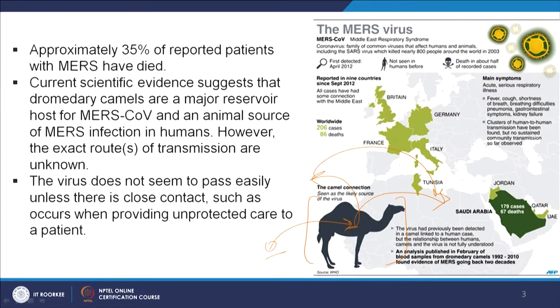This virus does not pass very easily — you require really close contact to transmit it, such as when treating a MERS patient without properly protecting yourself. An analysis published in February of blood samples from dromedary camels collected from 1992 to 2010 found evidence of MERS going back two decades. It was not that this virus came up in 2012 — it was already persisting in the environment for more than two decades before it infected hundreds of people across the Middle East and Europe, causing a substantial fatality rate.